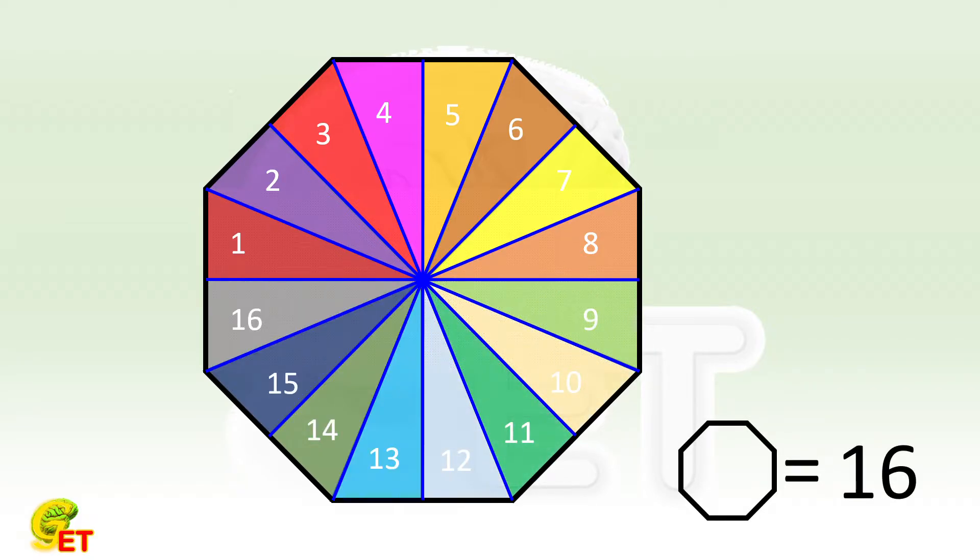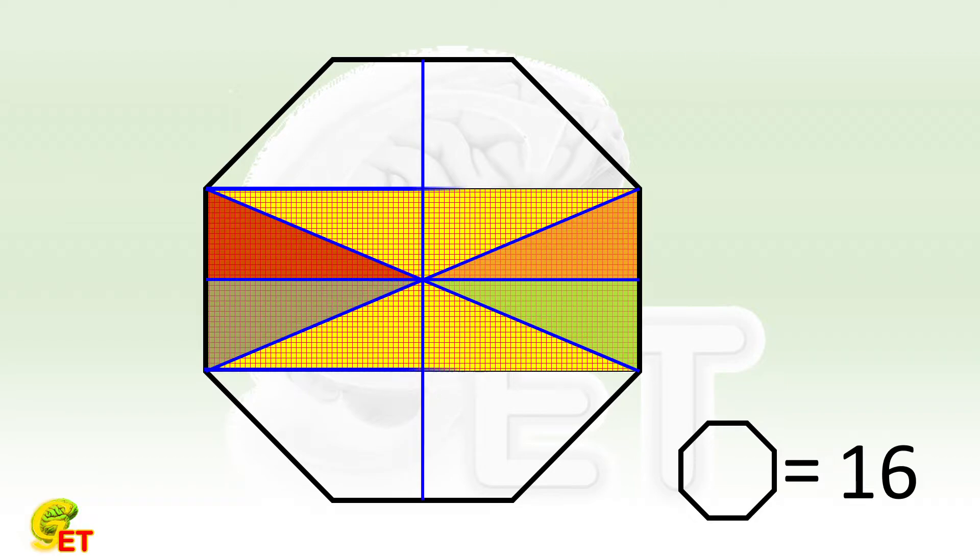Now, we need to see how many such triangles the rectangle can be divided into. To this end, we keep four of the previous lines and highlight the sides of the rectangle. It is easy to see the rectangle can be divided into 8 small triangles.